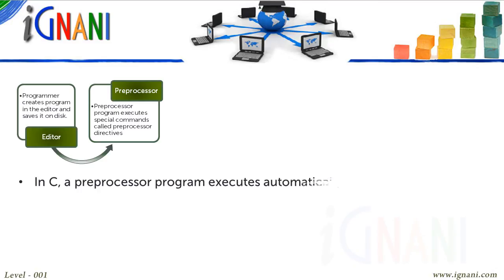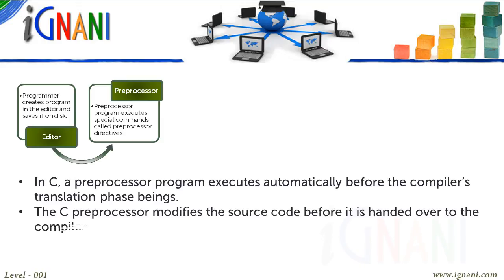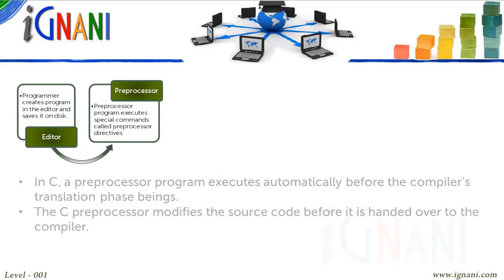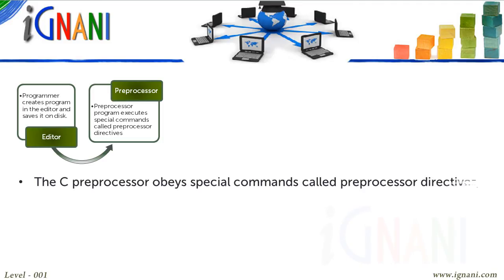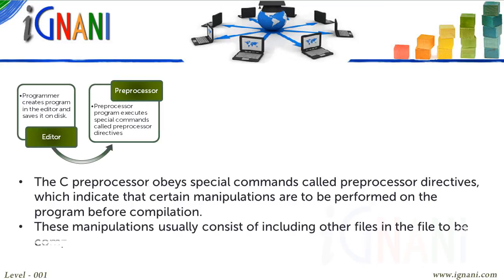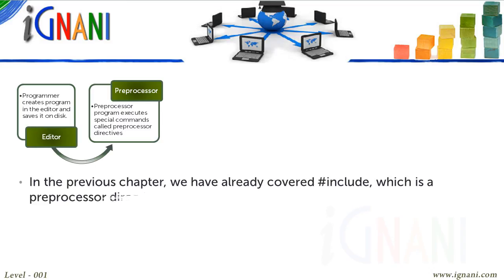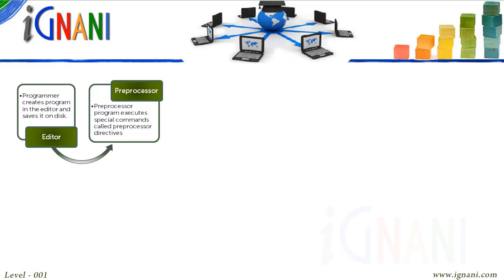In C, a Pre-Processor program executes automatically before the compiler's translation phase begins. The C Pre-Processor modifies the source code before it is handed over to the compiler. It obeys special commands called Pre-Processor Directives, which indicate that certain manipulations are to be performed before compiling — usually including other files and performing text replacements. In the previous chapter, we already covered #include, which is a Pre-Processor Directive. Pre-Processors are covered in detail later in this course.